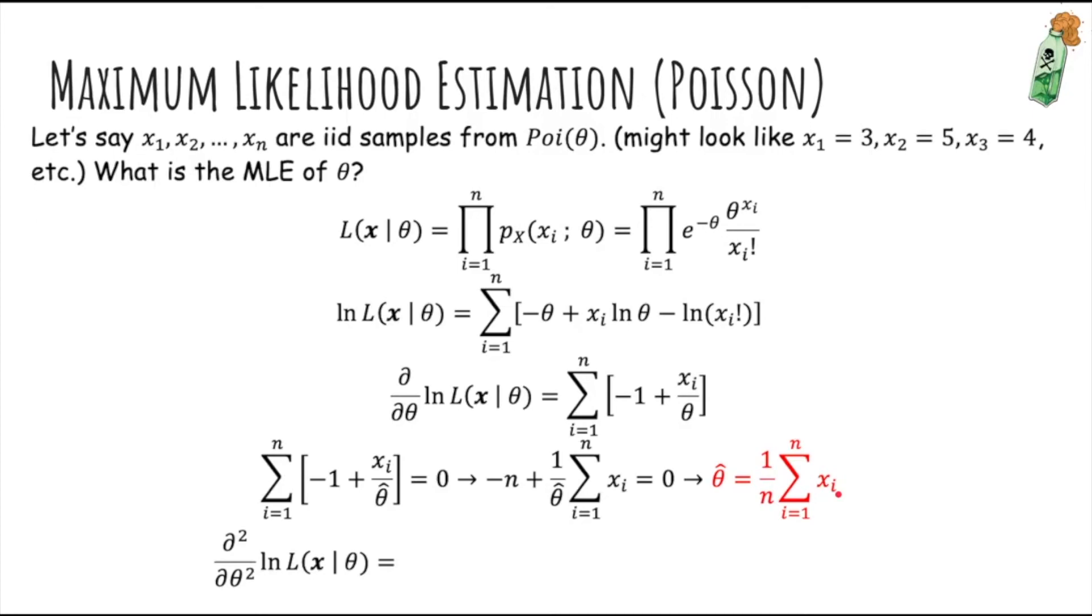So we want to take the second derivative also, because otherwise we don't know if this is the maximum or a minimum or just a saddle point. So let's take a second derivative to check. Let's differentiate this term again with respect to theta. So basically, using the laws of differentiation, we have negative xi over theta squared.